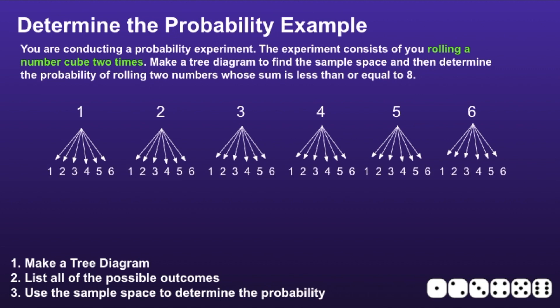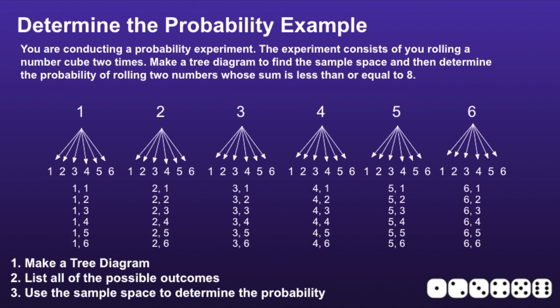This moves us on to step number two: list all the possible outcomes. In order to list all the outcomes, I'm going to follow those arrows. When I do that, I'm left with 36 total outcomes.